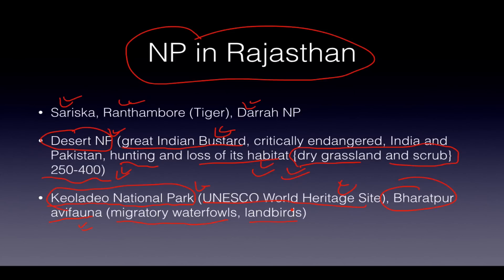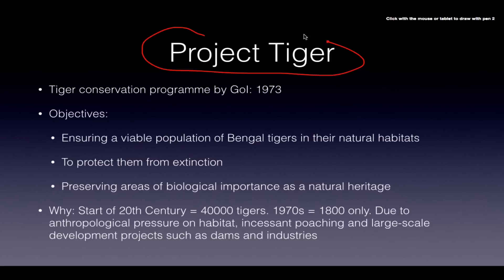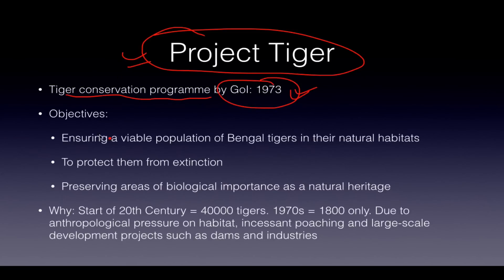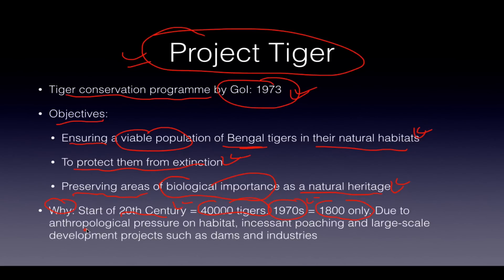Project Tiger is a tiger conservation program launched by the Government of India in 1973. Its objectives are to ensure a viable population of Bengal tigers in their natural habitats, to protect them from extinction, and to preserve areas of biological importance as a natural heritage. At the start of the 20th century there were 40,000 tigers; by the 1970s only 1,800 remained due to anthropological pressure on habitat, human population increase pressing on tiger habitat, and incessant poaching.